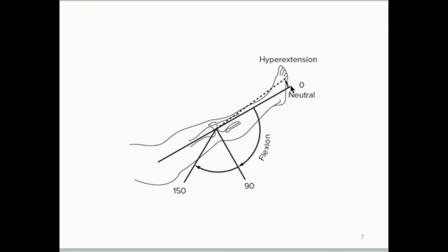There's actually a very small amount of motion allowed past the zero-degree point, past where the angle is 180 degrees, and that's called hyperextension. You don't want to do this — hyperextension can lead to damage to the knees and injury, and we'll talk more about that in the third video in this lecture.